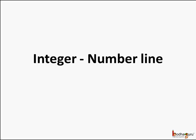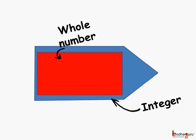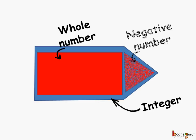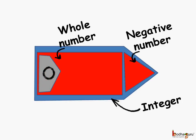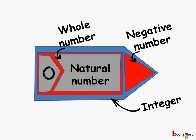First, what are integers? Integer is a collection of whole numbers and negative numbers, where whole numbers consist of zero and the natural numbers or the counting numbers.